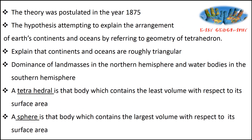This theory was postulated in the year 1875, attempting to explain the arrangement of continents and ocean basins. It explained that continents and oceans are roughly triangular, and also noted the dominance of land masses in the northern hemisphere and water bodies in the southern hemisphere. The theory explains two terms: tetrahedral — the body containing least volume with respect to surface area — and sphere — containing largest volume with respect to surface area.